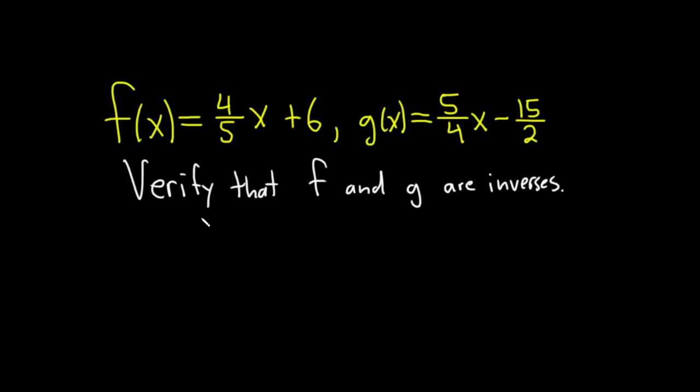So to do this we just have to check two things. We have to check that f∘g of x needs to be equal to x. And we also have to check that g∘f of x is also equal to x. So by verifying these two things we'll show that these functions are actually inverses. Okay let's go ahead and do it.